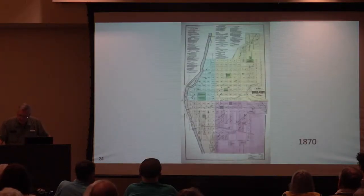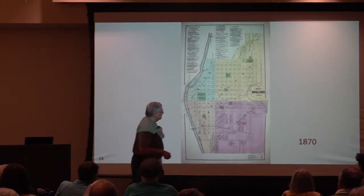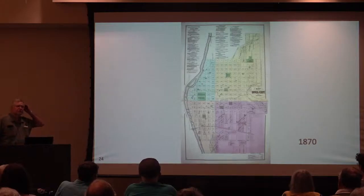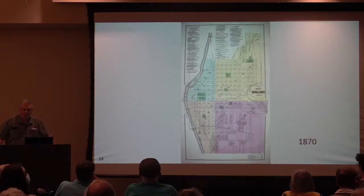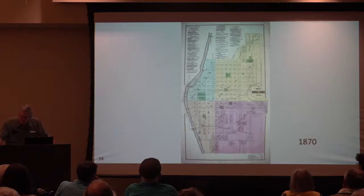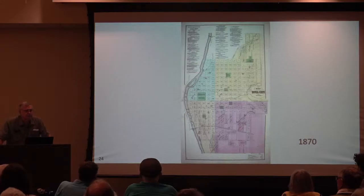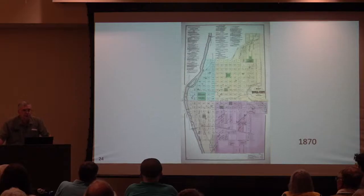Here's another map from 1870. The colored sections represent the four wards the city was divided into, and each ward had an elementary school. We believe all of those were built in the late 1850s, maybe 1857. They were all replaced — not until 1917 and 1918 — with Mann, Sabin, and Longfellow. Prior to that, in 1917, there was the Kellogg School, which many of you haven't heard of. I'll show you that in a moment.